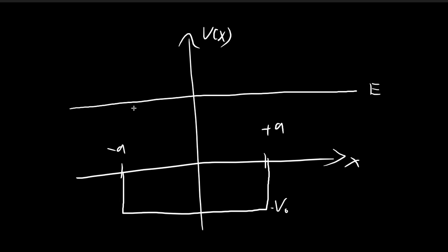Once again, we're going to divide this setup into three regions: Region 1 where x is smaller than negative A, Region 2 which is between negative and positive A, and Region 3 which is above positive A. Then we're going to solve the Schrödinger equation for these three separate regions and combine our answers.